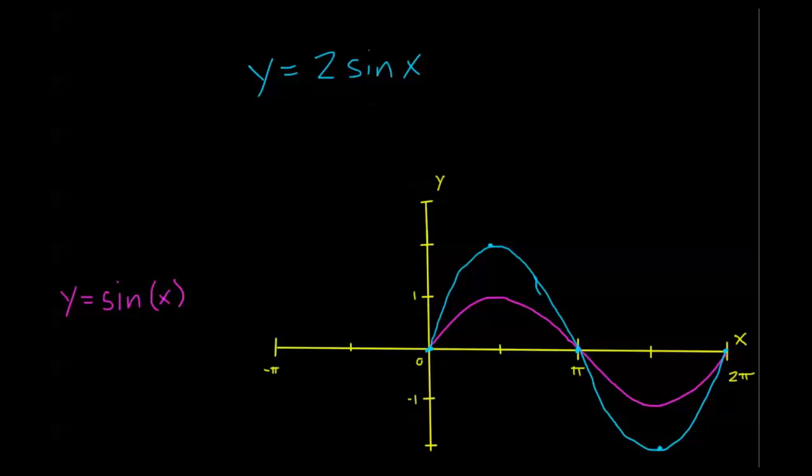Now, it doesn't need to be a whole number. I could have a fraction. Let's say I had something like y equals 1 half sine x. Now that just means I'm back here at my purple, my original. If sine is equal to 1 at pi over 2, that means that 1 half of sine is just equal to 1 half. Everywhere that sine is equal to 0, 1 half of sine is still equal to 0. And over here at 3 pi over 2, sine was equal to negative 1, so 1 half of that is negative 1 half. So I've kind of compressed this graph down now.